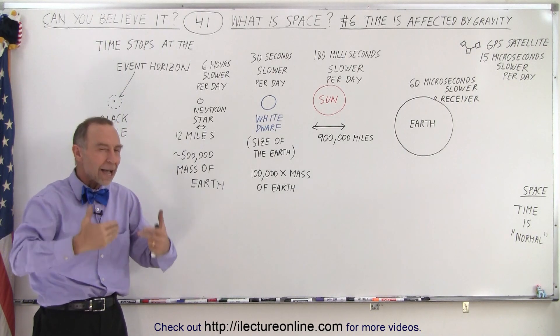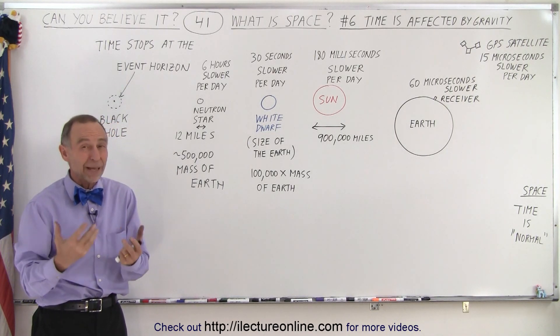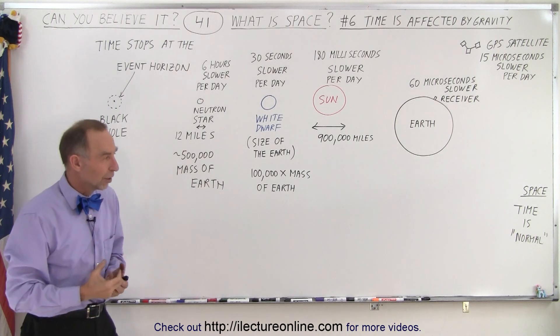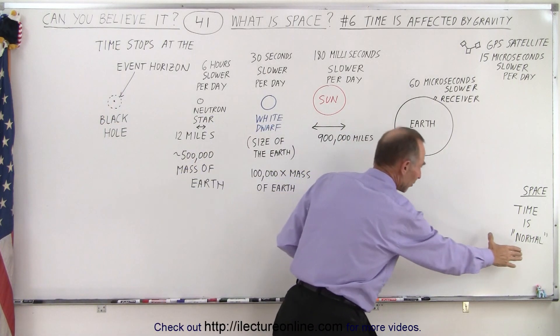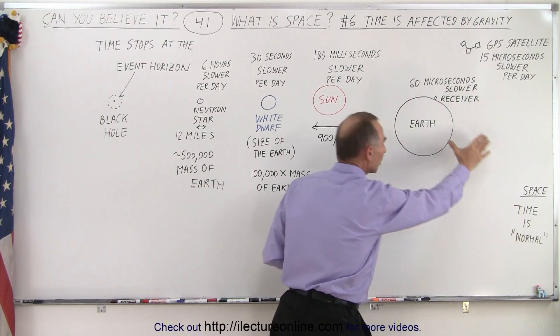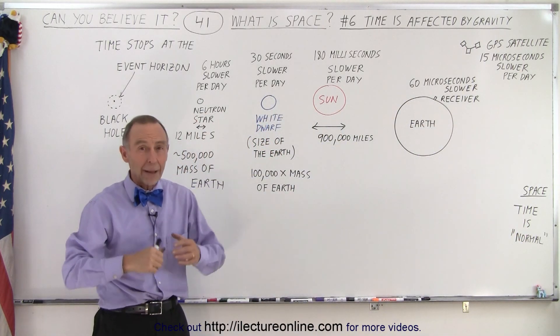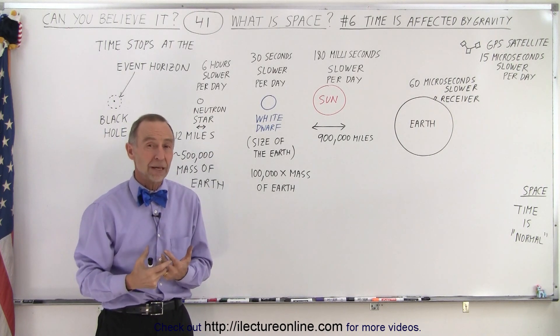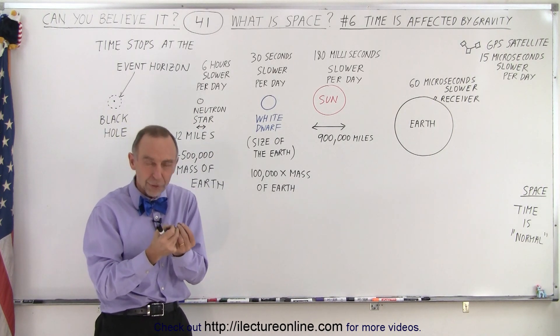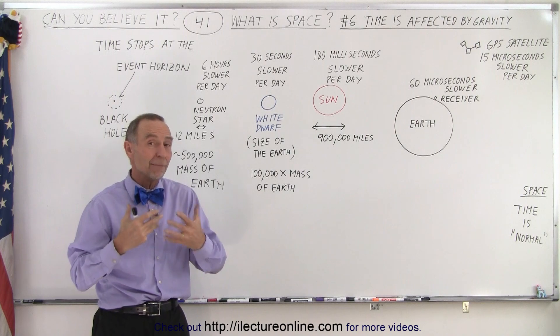So how time progresses in space depends upon space itself. Normally, time progresses as it always does, but anywhere in a gravitational field, time will run slower. An absolute amazing property of space, and hopefully gives us a little bit more insight of what space might actually be.